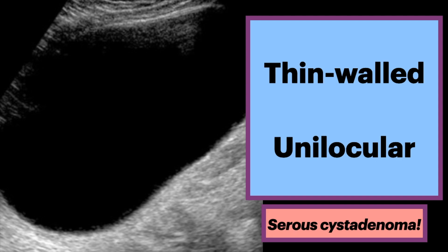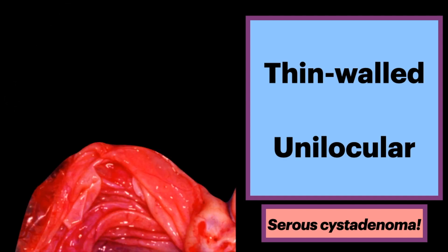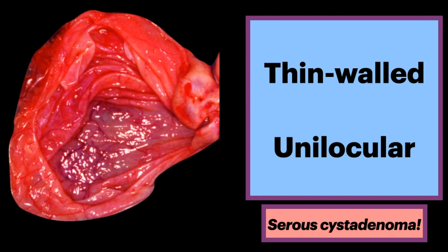This ovarian serous cyst adenoma measured greater than 15 centimeters in size. Gross pathology after the fluid has been drained shows the thin wall typical of a serous cyst adenoma. They are typically unilocular or have few septations.